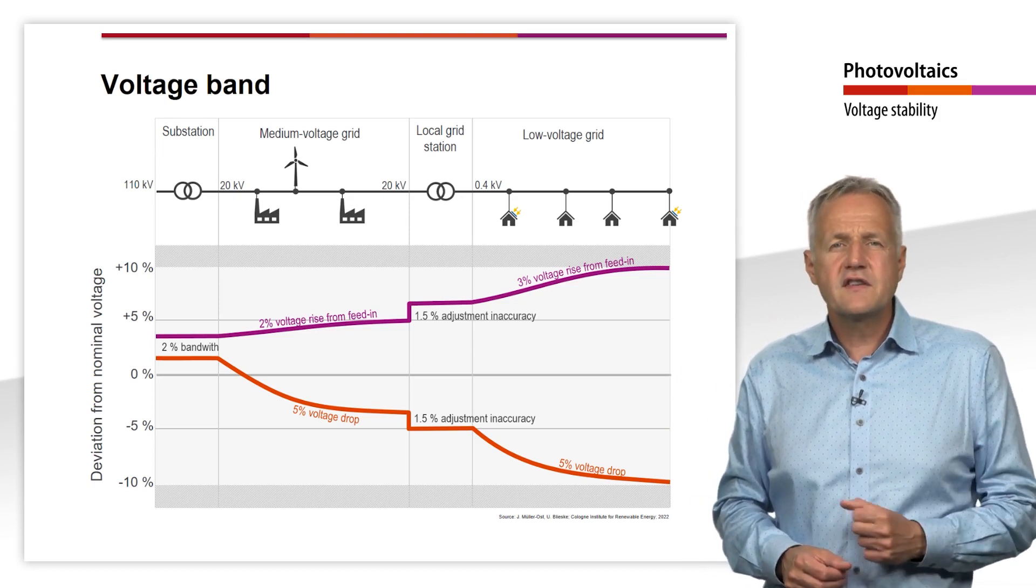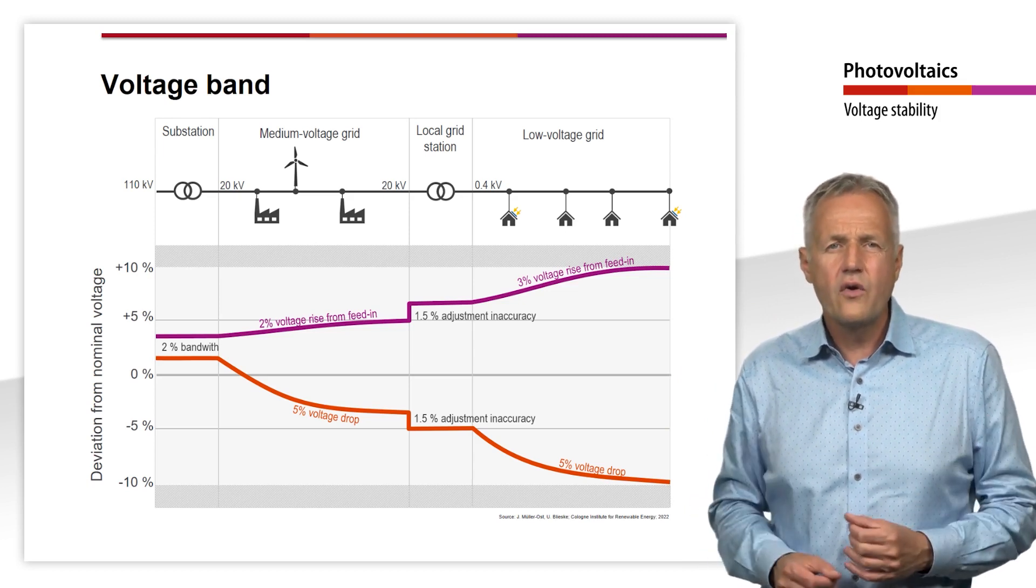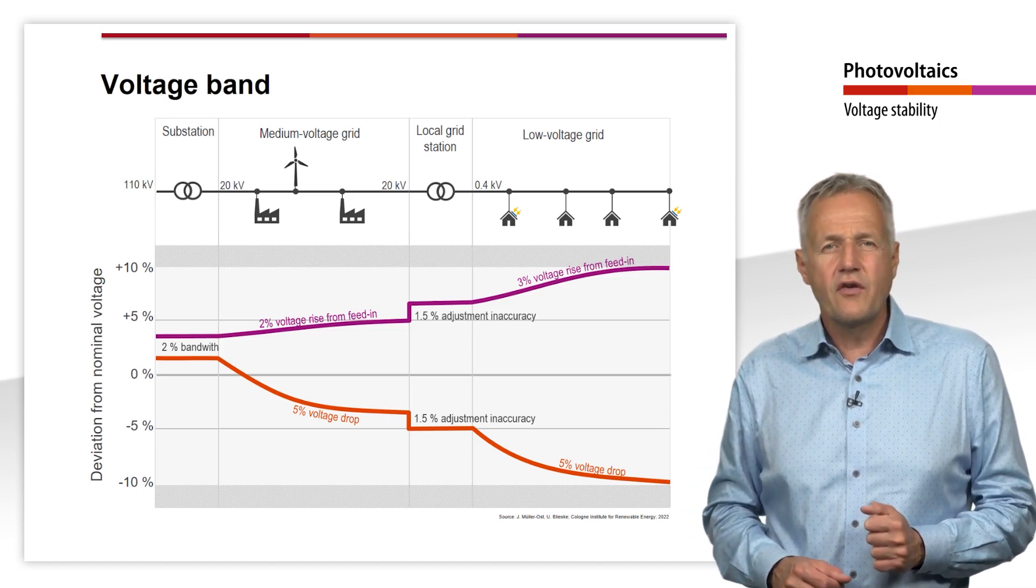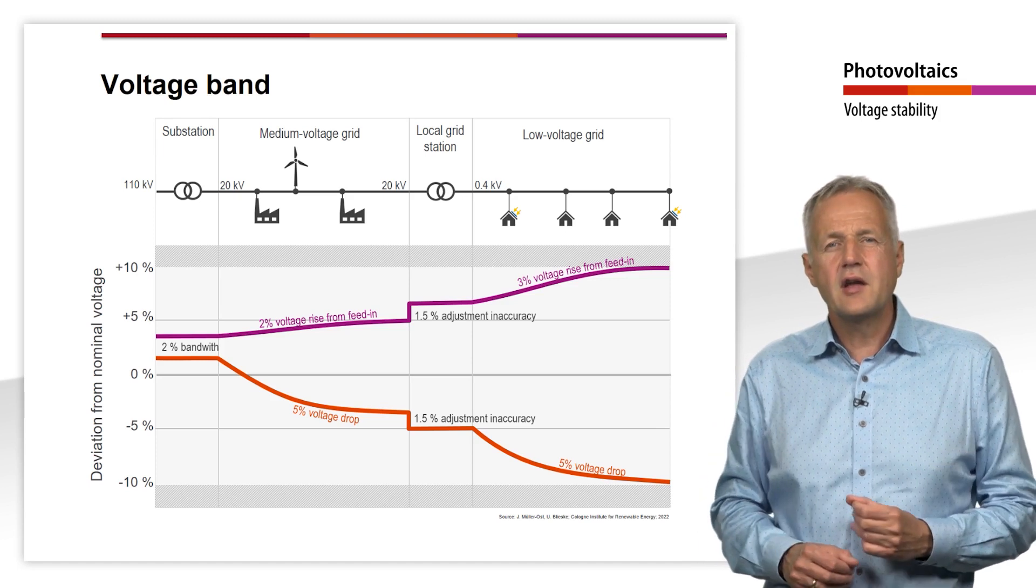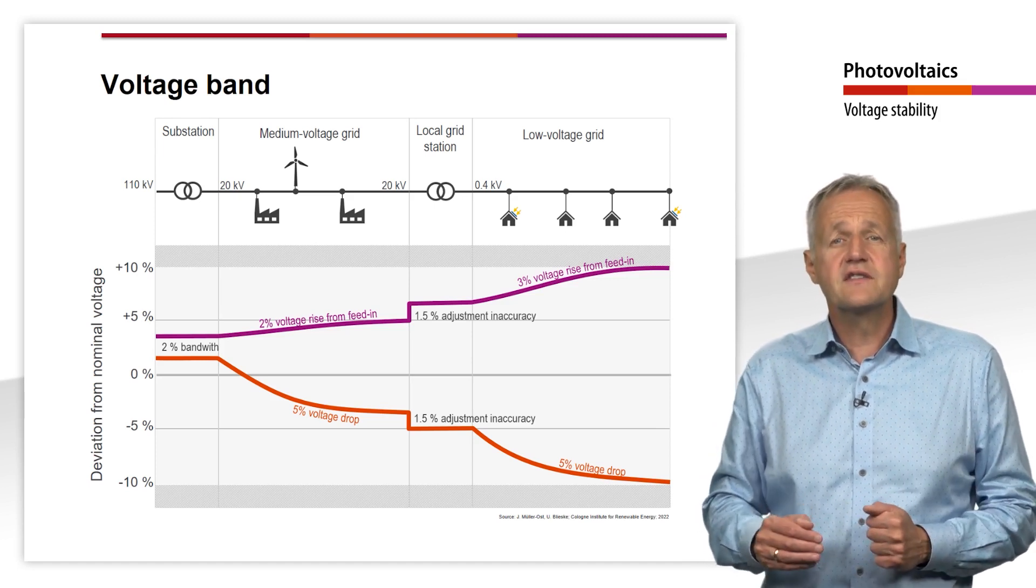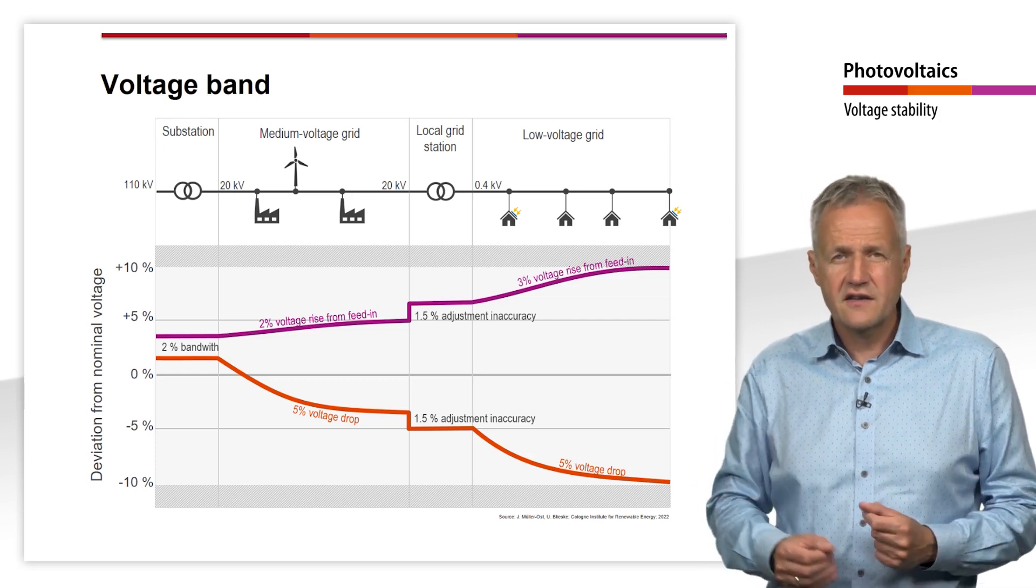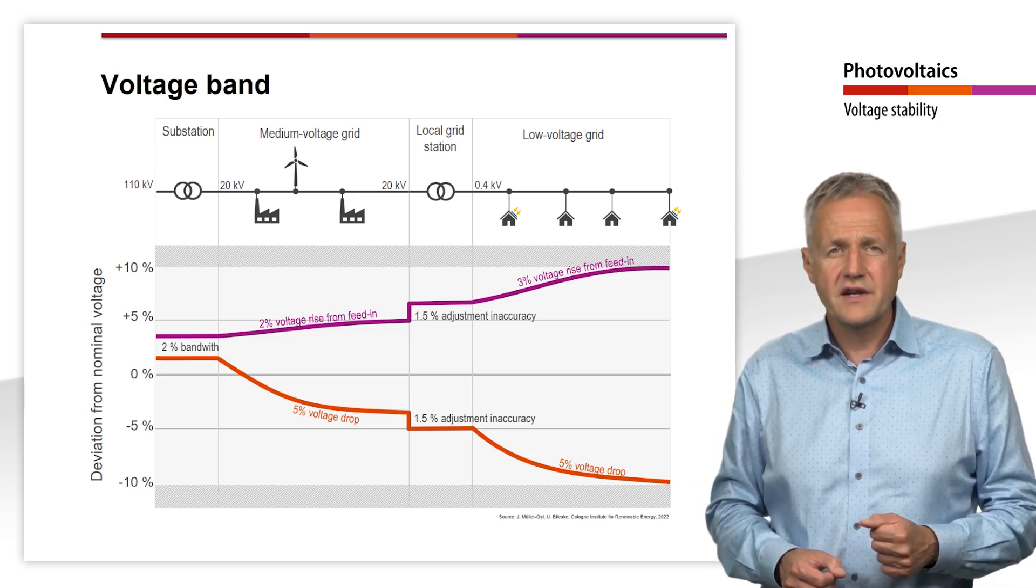If a PV system is connected to the low or medium voltage grid, it must be checked beforehand whether an impermissible voltage increase is to be expected as a result. In Germany, this check is carried out by the grid operator.